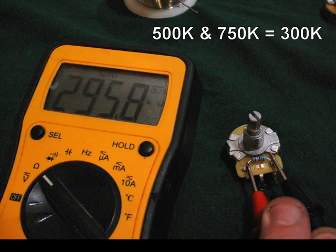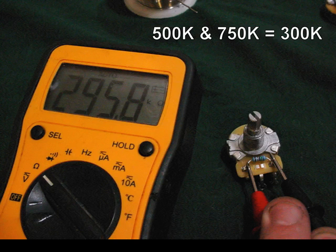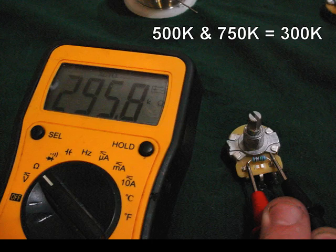Different value resistors are going to let you decrease the value of your pot to different final values. For example, a 1 meg resistor will leave your pot being about 330k, whereas a 500k resistor will take your pot down to about 250k.